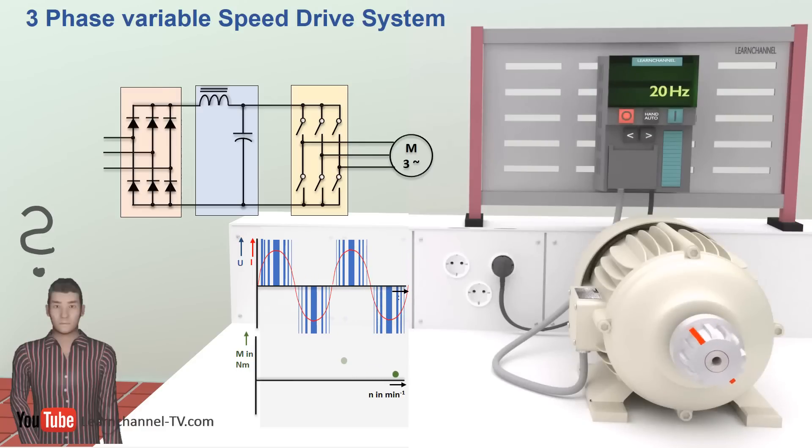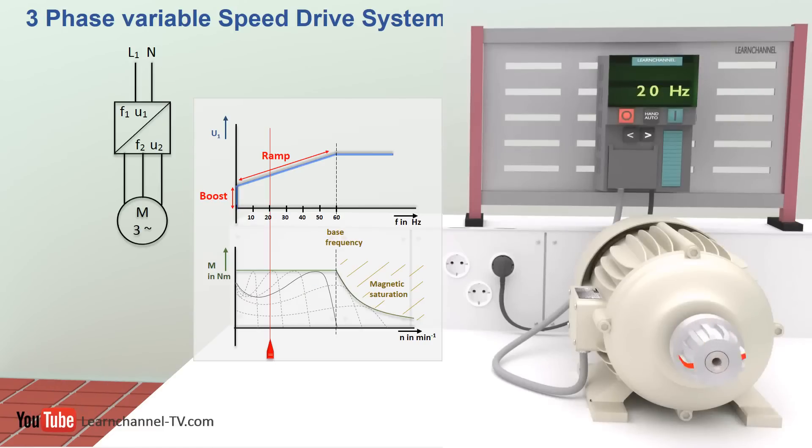But now you have a problem. The inductive reactance of the motor coils rises with the signal frequency. That means you would get less torque. So what is the solution? To overcome this obstacle, you would adapt the voltage to the frequency during acceleration and deceleration.